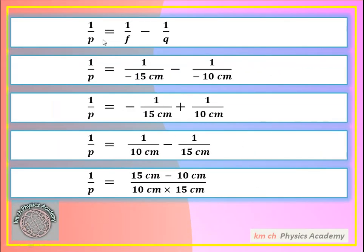So 1/p = 1/f − 1/q. Now we put in the values. The value of 1/f is 1 over minus 15 cm. The value of 1/q is 1 over minus 10 cm. When minus 1/q moves to the other side, minus minus becomes positive.